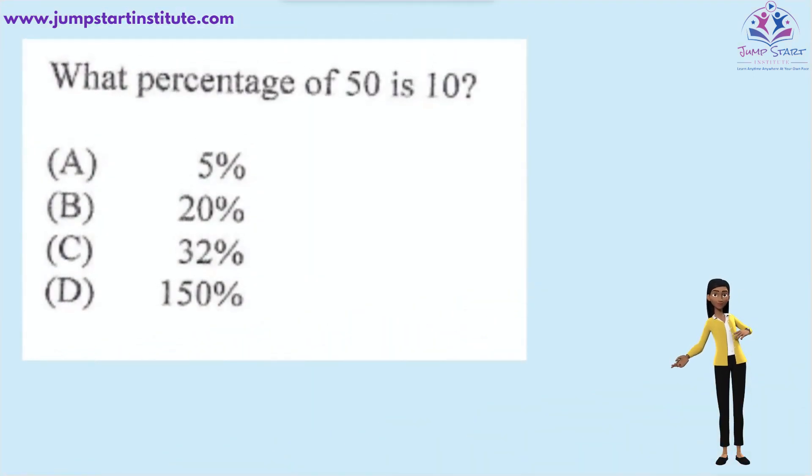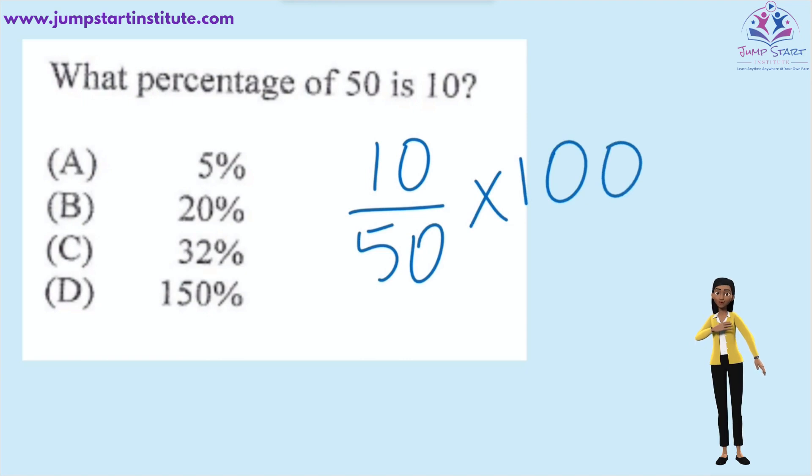What percentage of 50 is 10? To calculate the percentage, we say 10 over 50 multiplied by 100. Cancelling, we say 50 into itself goes once, 5 into 100 goes twice. 2 times 10, that's 20. Therefore, the answer is B, 20%.